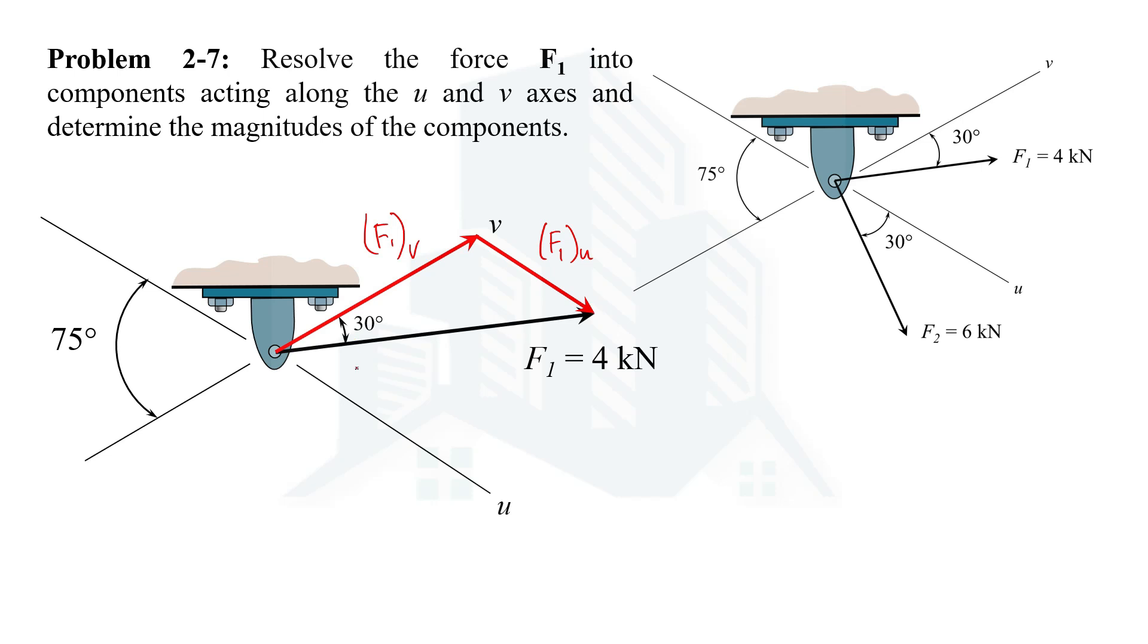So in this way we have a triangle where the two sides are F1v and F1u, and the third one is F1 itself. Now when we have a triangle, we can easily apply the sine law to determine the magnitude of these components, but for that we need to know the interior angles. One of the interior angles in this triangle is known, which is 30 degrees, but we do not know the other angles. We can easily determine those.